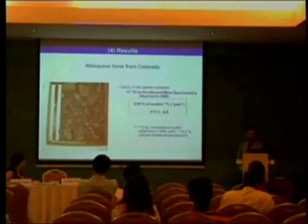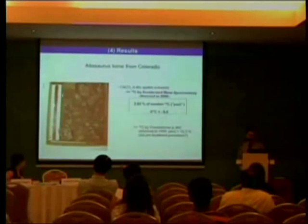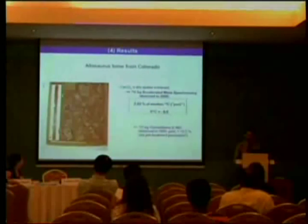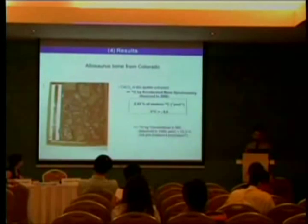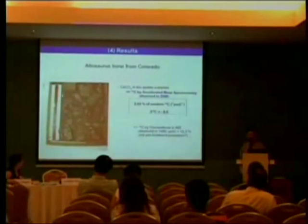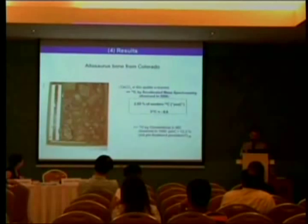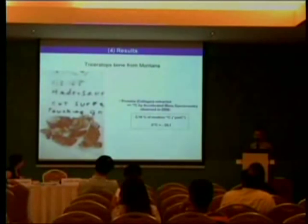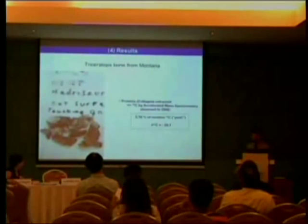Another specimen — the Allosaurus from Colorado. Here we also applied C-14 measurement to calcium carbonate from the bone apatite, and obtained 2.02% modern carbon C-14, and Delta-13C was minus 36.6 per mil. An earlier measurement delivered a higher value of 13.3%. We're not sure of the reason — it could be an older pretreatment procedure. The Triceratops bone from Montana, where we extracted proteins and collagen, delivered a value of 2.16% modern C-14 and Delta-13C minus 20.1 per mil.